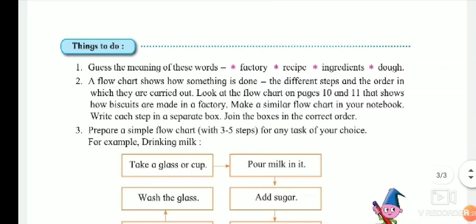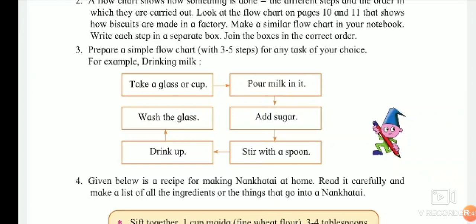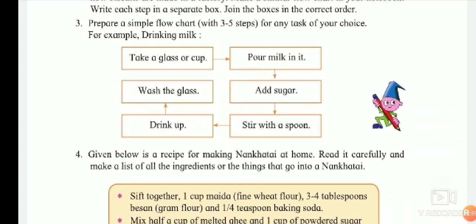Exercise 3: Prepare a simple flowchart with three to five steps for any task of your choice. For example, drinking milk: take a glass or cup, pour milk in it, add sugar, stir it with a spoon, drink up, wash the glass.